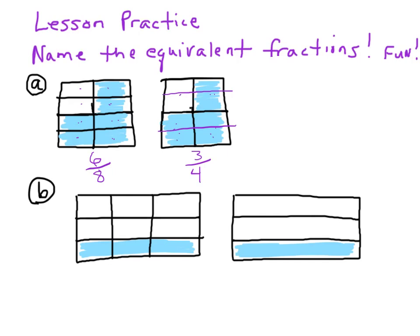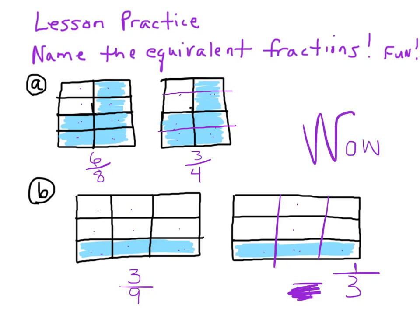Let's take a look at B. We have one, two, three, four, five, six, seven, eight, nine — so there's nine, and three of them are colored in. Here, I have one, two, three — let's divide it. There we go — three, and I have one of them colored in. Is that equal? One, two, three out of nine — yeah, same thing. Wow! You have got to be shouting for joy. This is just too good.